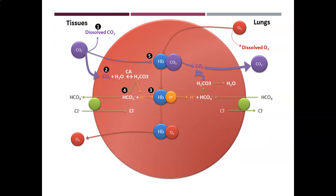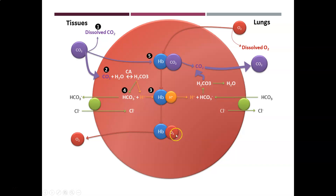Here's a quick review of how gases are transported in the blood, starting at the lungs. Oxygen dissolves into the blood, crosses into the red blood cell, and binds to hemoglobin, forming oxyhemoglobin. The hemoglobin holds onto that oxygen until it gets to the tissues.